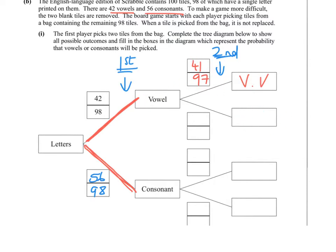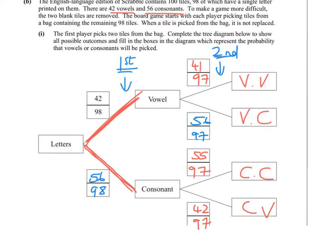If you got a vowel on the first pick and then did not get a vowel — meaning you got a consonant on the second — there are still 56 consonants in the bag but only 97 letters. For consonant then consonant: 55 out of 97. For consonant then vowel: no vowels have been picked yet so it's 42 out of 97. That fills in all the options on the tree diagram.